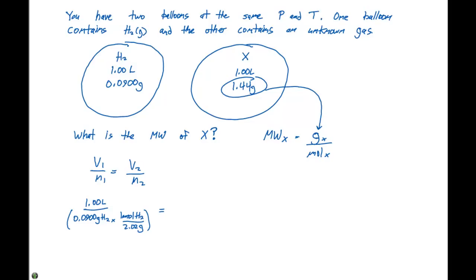So this quantity we're going to use here for the number of moles of H2. That's going to equal V2, which our unknown gas has a volume of 1.00 liters, divided by the number of moles of X. If we go through and solve for this, our number of moles of X is going to equal 0.0446 moles.